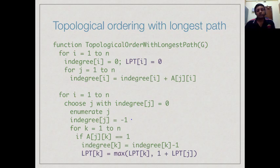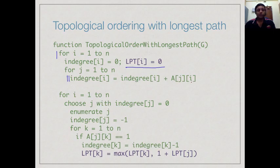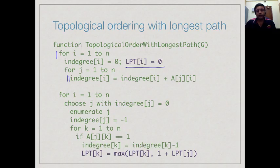The pseudocode for longest path is very similar to topological sort — we just track an extra longest path value. We initialize the in-degree and also initialize the longest path Lpt[i] to 0 for every vertex. This is the adjacency matrix version with O(n²) work. When we choose a vertex with in-degree 0, we enumerate it, set its in-degree to -1, and for all outgoing neighbors k, we update the in-degree and set Lpt[k] = max(Lpt[k], 1 + Lpt[current node]). This is a simple variation of topological ordering that also computes the longest path.